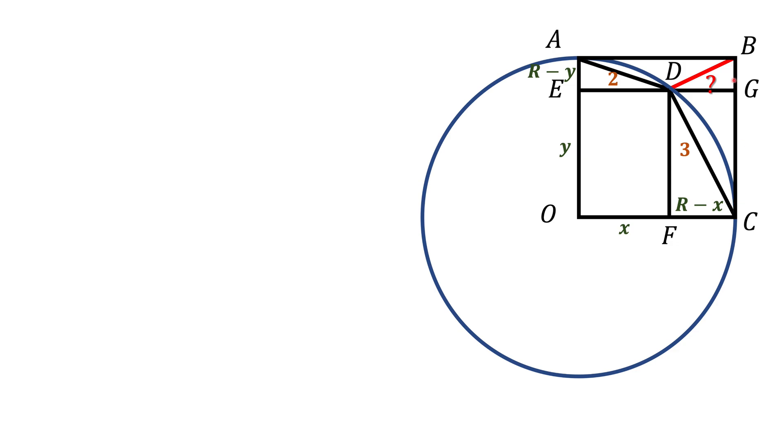And now we can find BD using Pythagorean Theorem for the right triangle BDG. And from that theorem we find that BD squared equals to this expression.